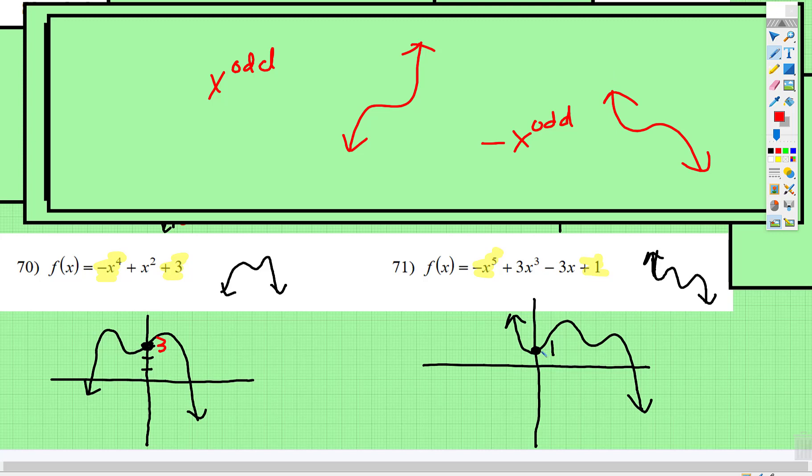And that's what this is. It's a little bit more curvy, but this is the general shape, and it touches right there at positive 1. This is it for sketching the general shape of polynomial functions.